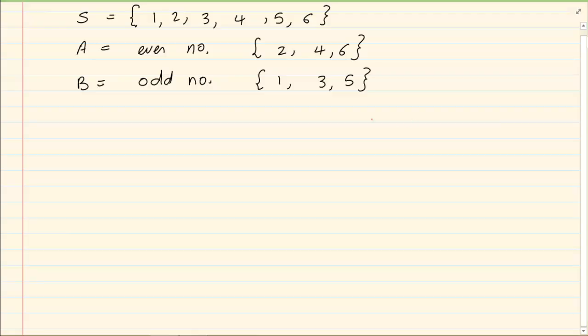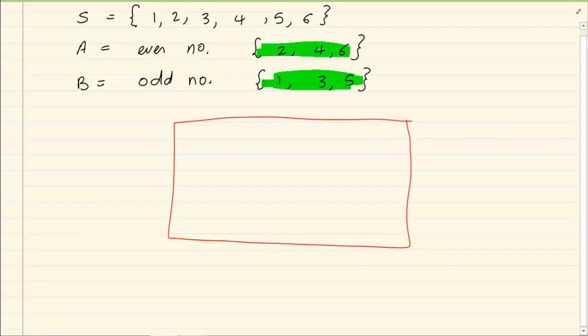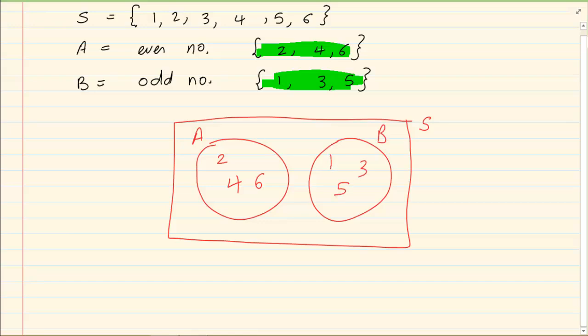Now if we were to draw a sample space, you can see between these two they have nothing in common. Now when they have nothing in common I am going to have the two circles but they don't touch each other. Under A I am going to have 2, 4 and 6. Under B I am going to have 1, 3 and 5. Now can you see on the rest of the place where we don't have the circles, I am not writing any numbers because I have used all of the sample space already.